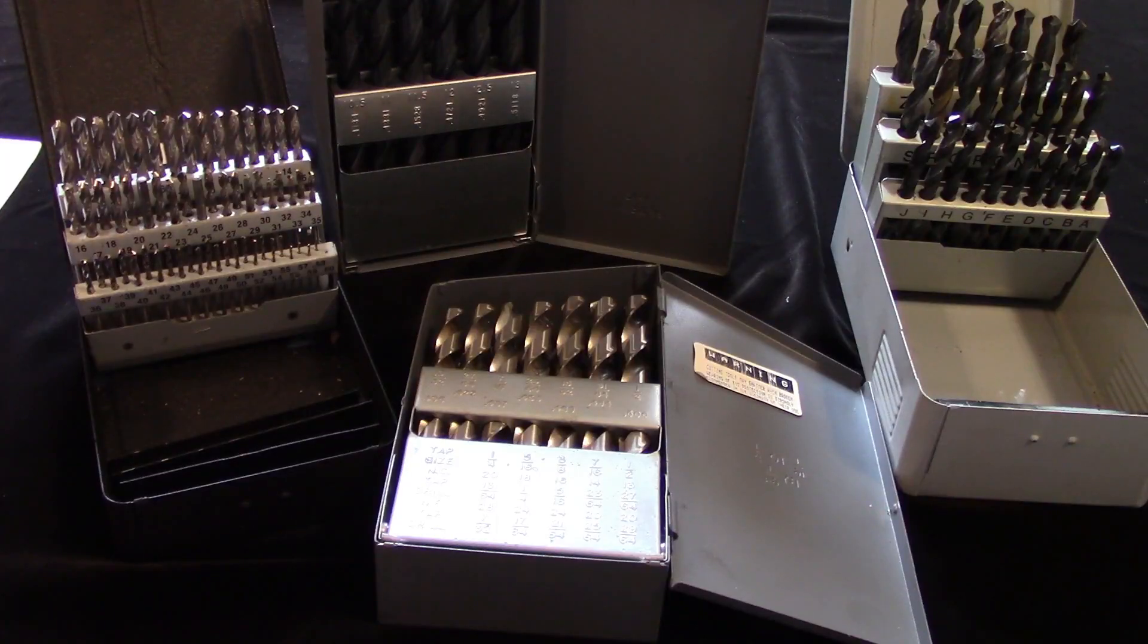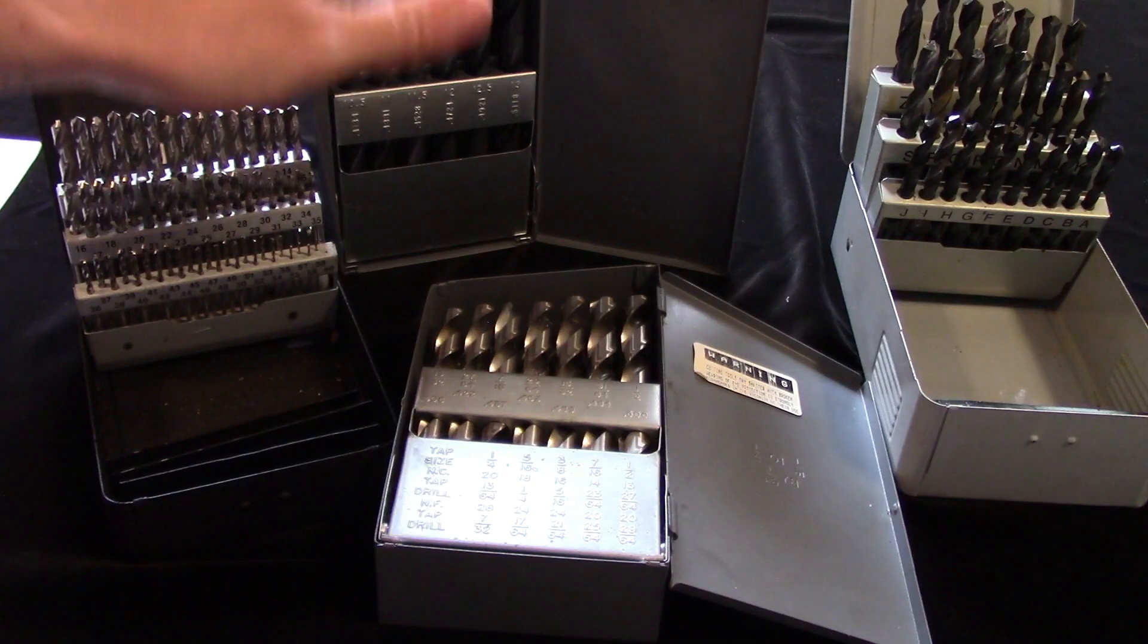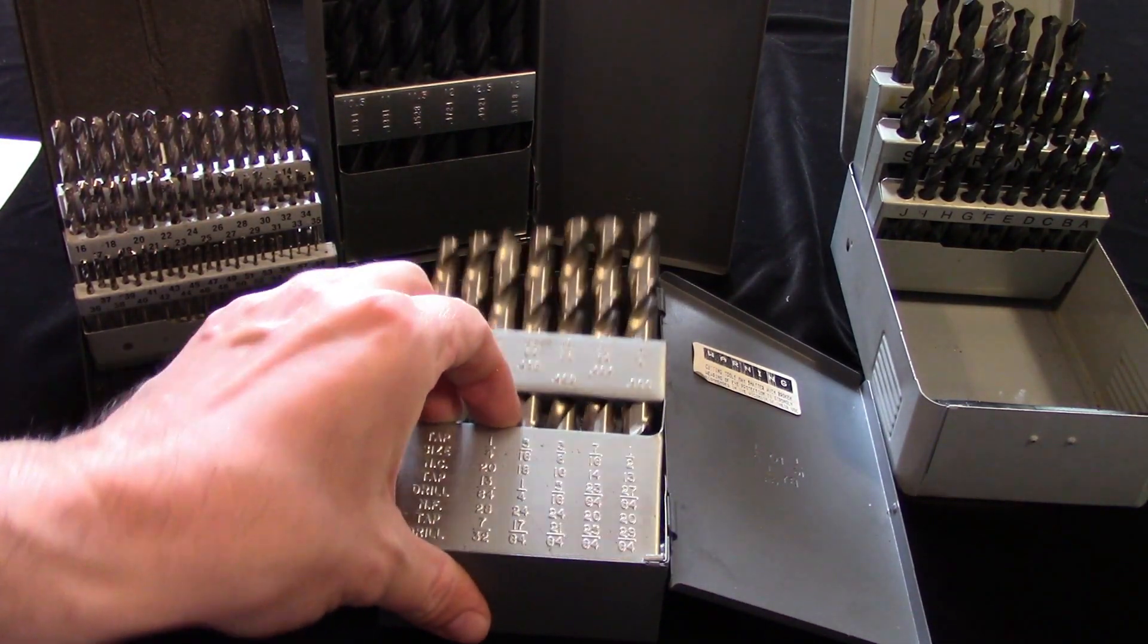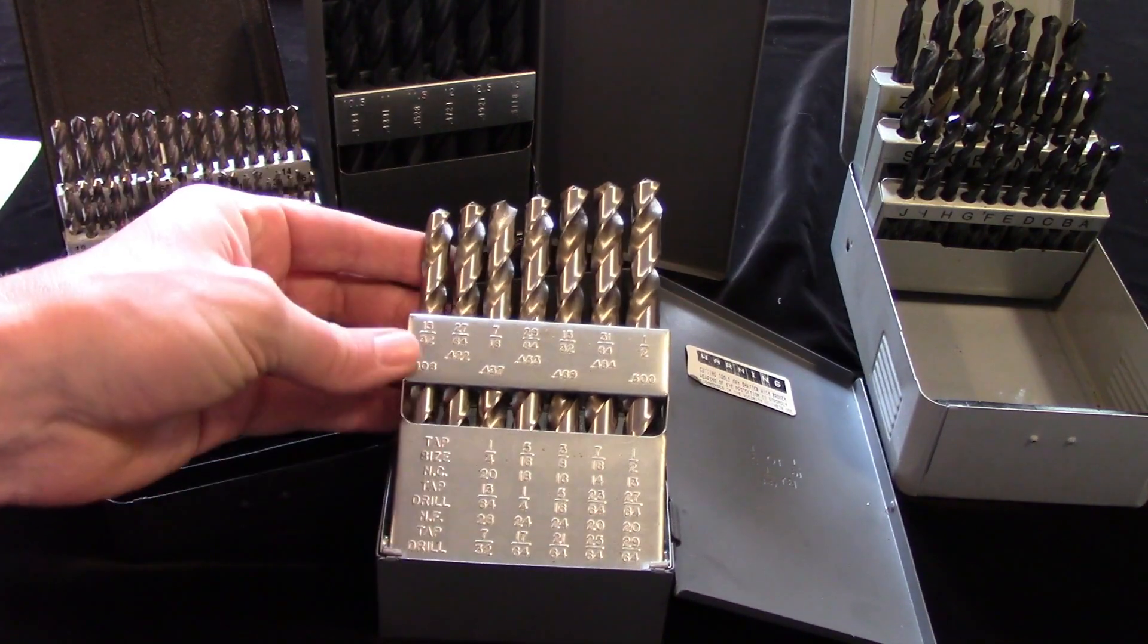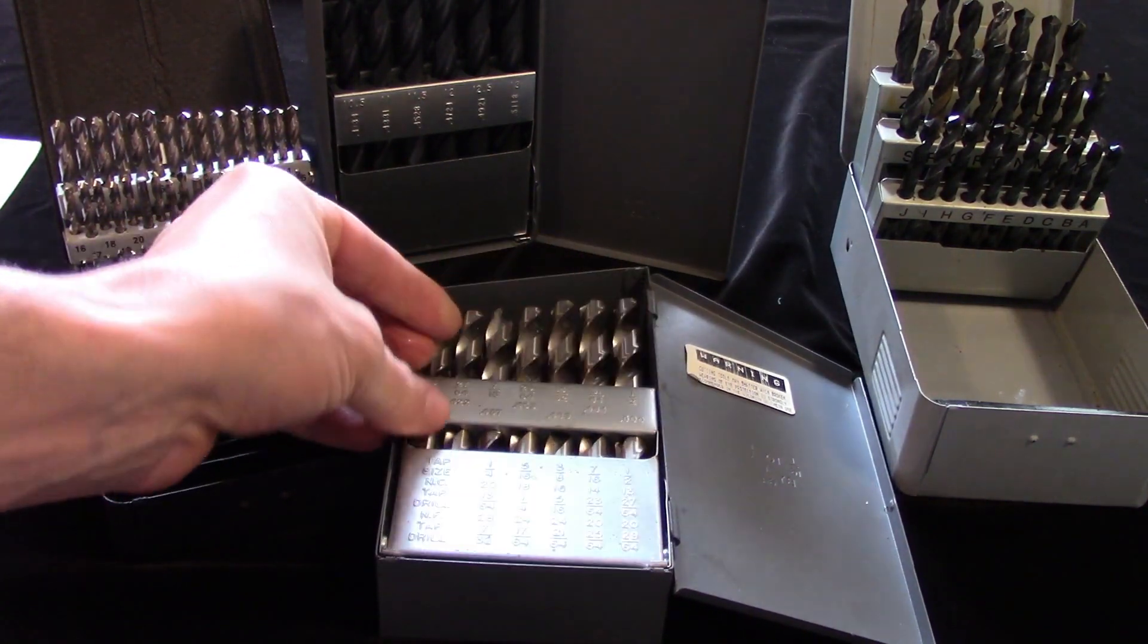Drills are available for sale in different indexes or sets, and those sets are fractional, number, letter, and metric. The fractional index contains drills from a sixteenth of an inch to a half inch by sixty-fourths. Larger and smaller drills are available individually, with the larger drills generally being silver and demming drills.